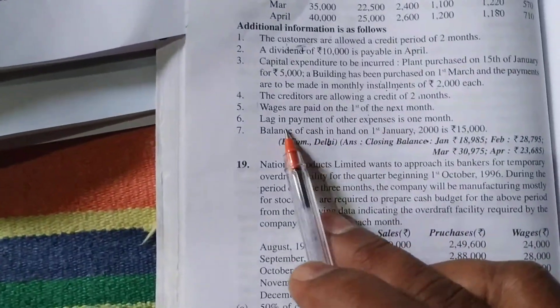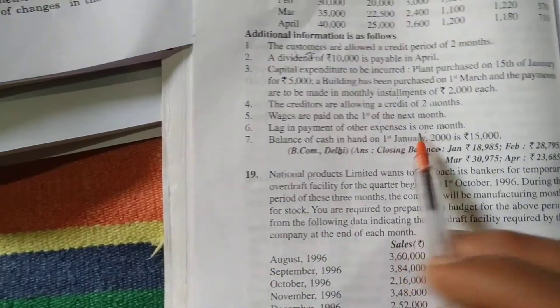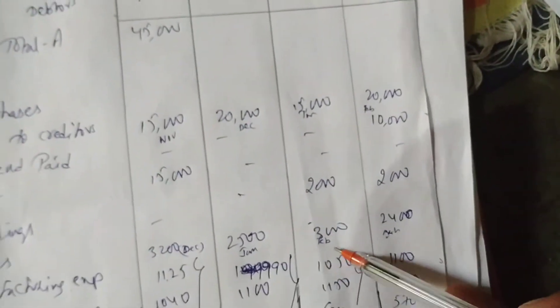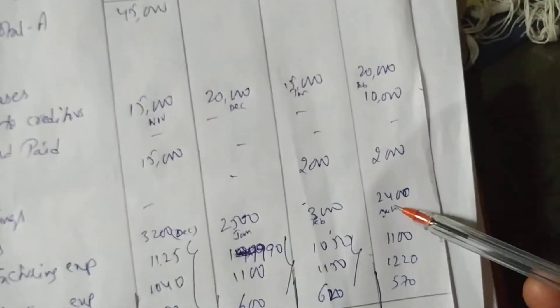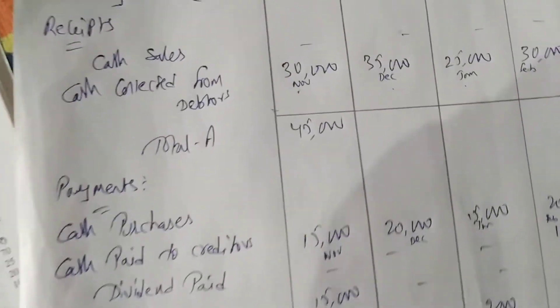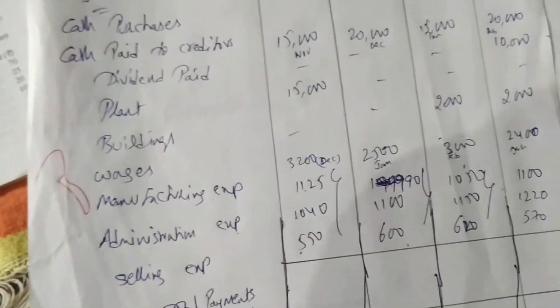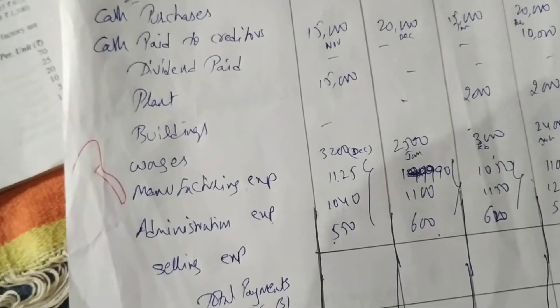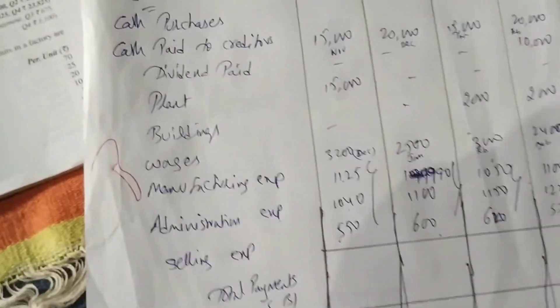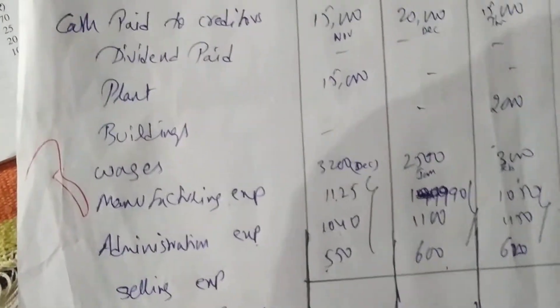The rule is: lag in payment of other expenses is one month. So in January we pick December's expenses; January's expenses are paid in February; February's in March; March's in April. Once you understand which month's figures go where, it is straightforward. Now let's calculate the totals. Total receipts for January are 45,000.